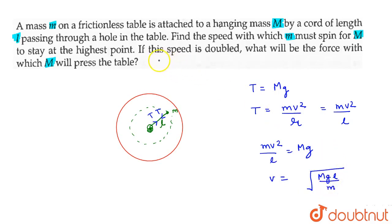Now, if this speed is doubled, what will be the force with which M will press the table? Now, if we have speed to double, then we have capital M, then the forces will be T, then the normal reaction will be N, then the weight will be capital MG, then the small M will be T.